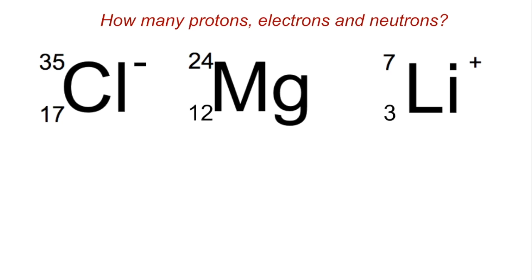So the proton number is the easiest one to start with, that's just the atomic number, so 17, 12 and 3.